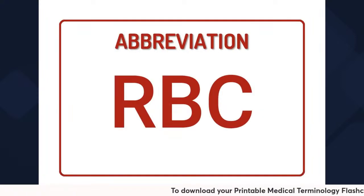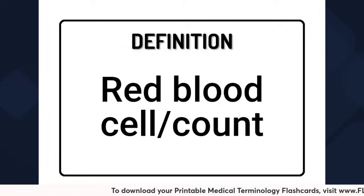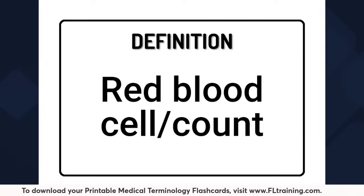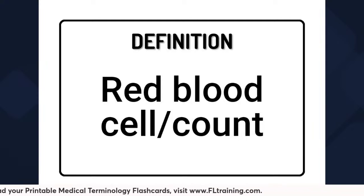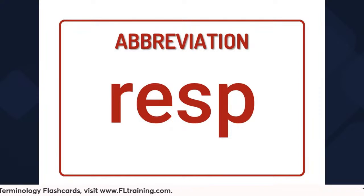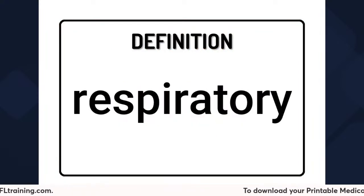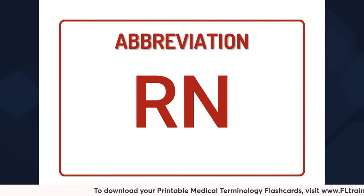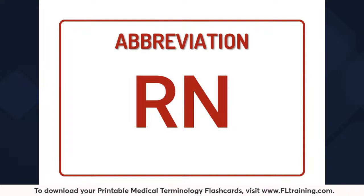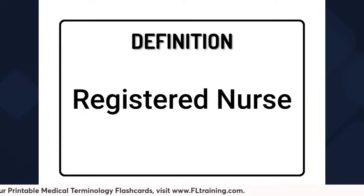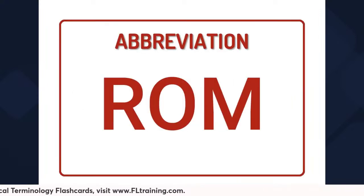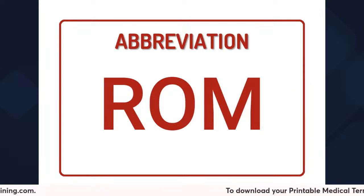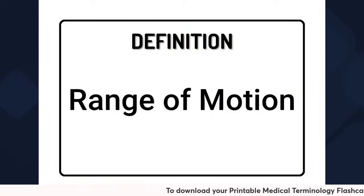R-B-C is red blood cell or red blood count. R-E-S-P is short for respiratory, as in the respiratory system. R-N is the medical abbreviation for registered nurse. R-O-M is the medical abbreviation for range of motion.